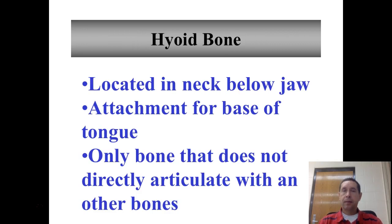Lastly, we have the hyoid bone, which is located in the neck, below or behind the jaw. It serves as an attachment for the base of the tongue, and it's the only bone in the body that doesn't directly articulate with any other bones.